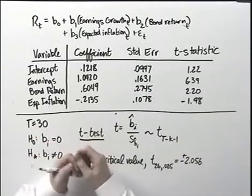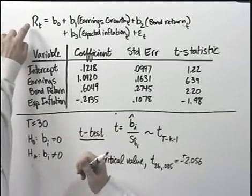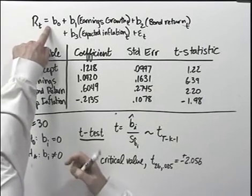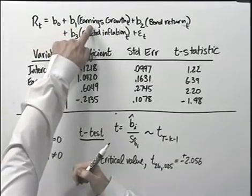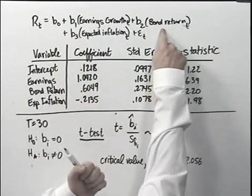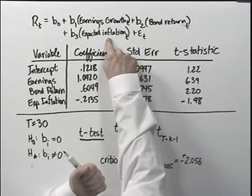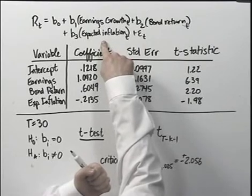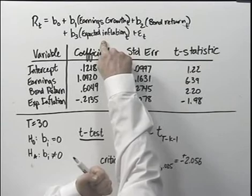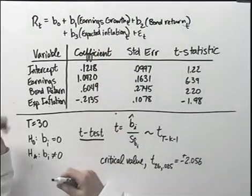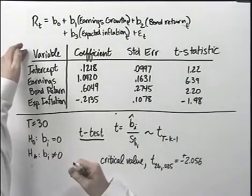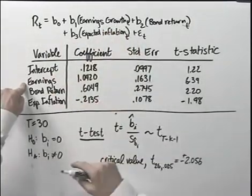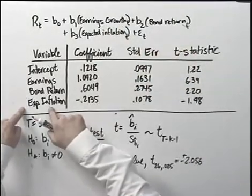The dependent variable is a return of some kind, maybe the return on the S&P 500 index. I'm going to try to explain that with an intercept and the independent variables of earnings growth, bond return, and expected inflation. So this is our x1 variable, x2 variable, and x3 variable. I gather some data and enter it into my statistical program or spreadsheet and estimate the regression. Typically, I'll get a table of results like below. It reports the variable: intercept corresponding to the constant term, earnings which is x1, bond return which is x2, and expected inflation which is x3.